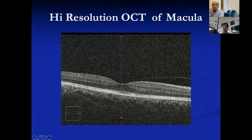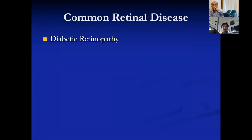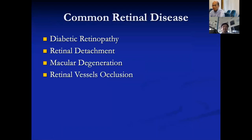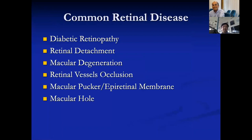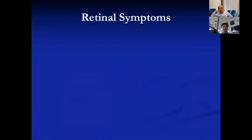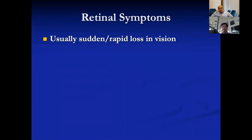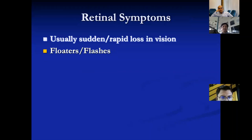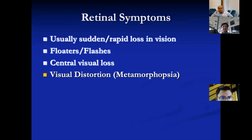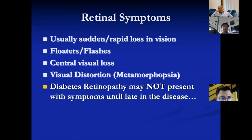The common diseases I'll go through today are: diabetic retinopathy, macular degeneration, ocular vein occlusions, epiretinal membrane, and macular hole. Generally, retinal symptoms can present as sudden or rapid vision loss, preceded by floaters or flashes, central vision loss, or distortion — where lines appear crooked or there's magnification or minification. Any distortion in vision suggests a probable macular problem.